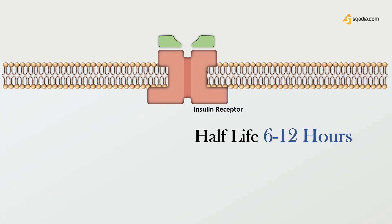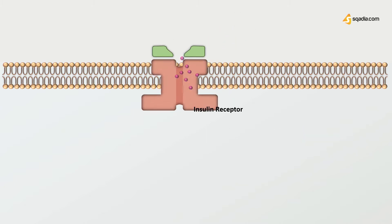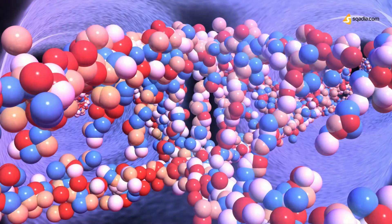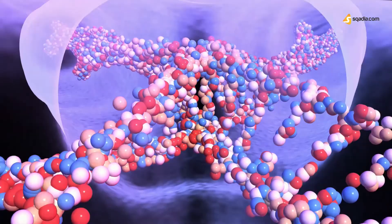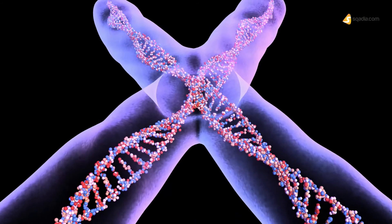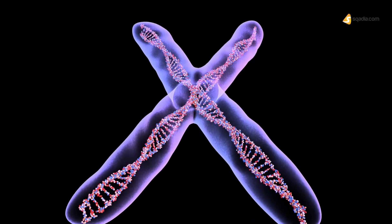The half-life of insulin receptors is 6 to 12 hours, meaning they are constantly synthesized and degraded. Genes on chromosome 19 synthesize these glycoprotein receptors.